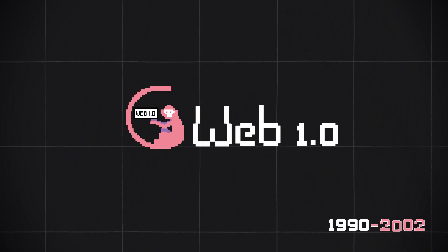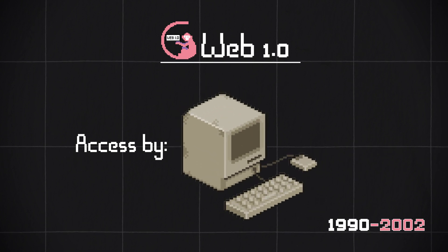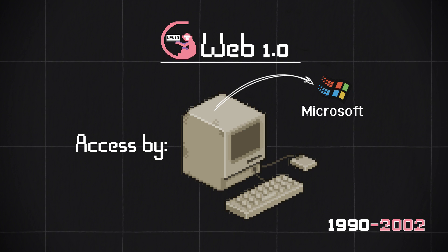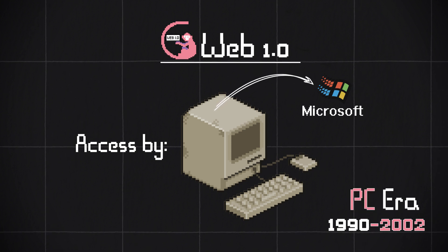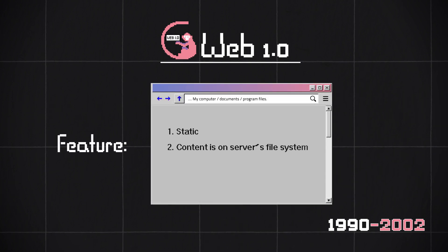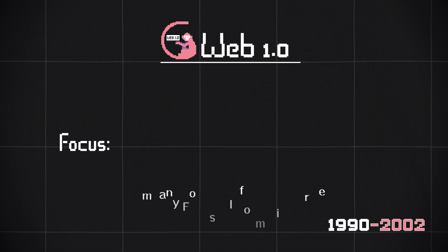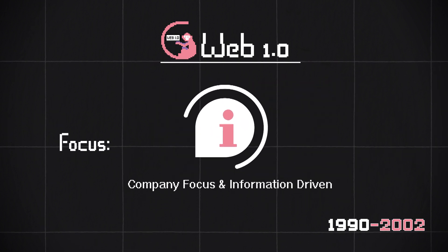Let's begin with Web 1.0. To access Web 1.0, you would use personal computers or PCs, which Microsoft was absolutely dominating. Many people also think of this period as the PC era. When you accessed the internet in its early days, it was static — content was on the server's file system, and users could only consume content online. This is the read-only version of the internet.